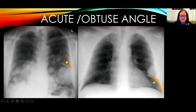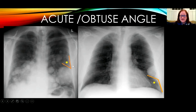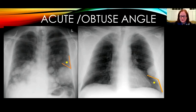Here are two chest radiographs. On the left, a patient with metastatic renal cell cancer and cannonball metastases — the largest lesion makes an acute angle with the chest wall. The patient on the right has a solitary plasmacytoma in their left chest wall, and this makes an obtuse, larger than 90-degree angle with the chest wall.